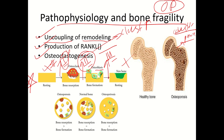The second mechanism is production of RANKL, which occurs when bone resorption activity is greater than bone formation activity. The third mechanism is osteoclastogenesis — the reproduction of osteoclastic cells — thus increasing the bone resorption rate compared to bone formation.